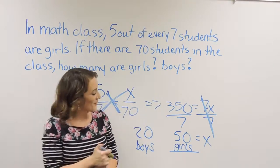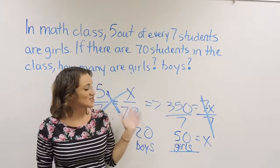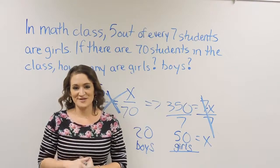So that is how we solve this problem: setting up a proportion and then making sure that we cross multiply in order to solve it.